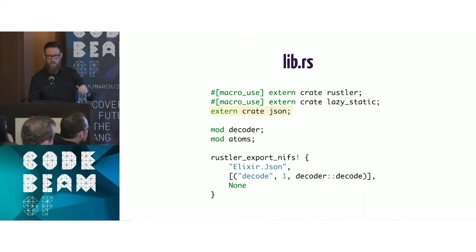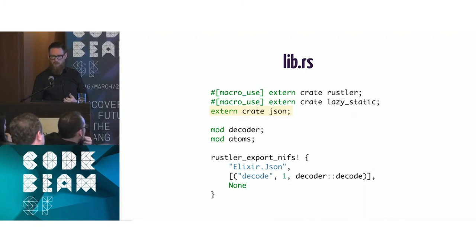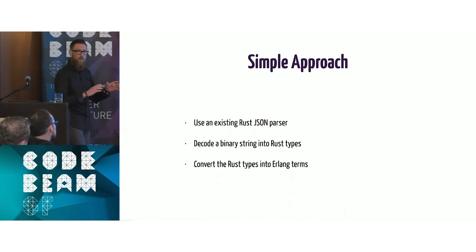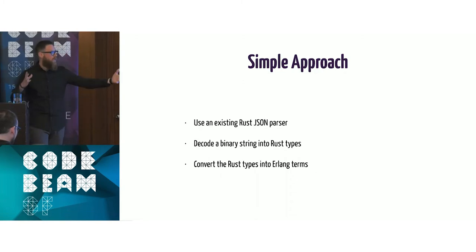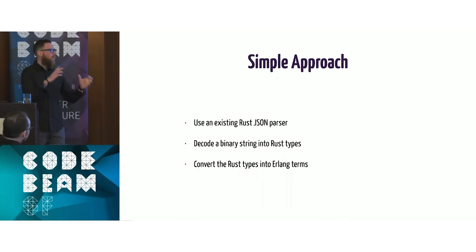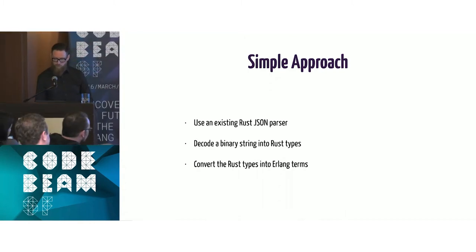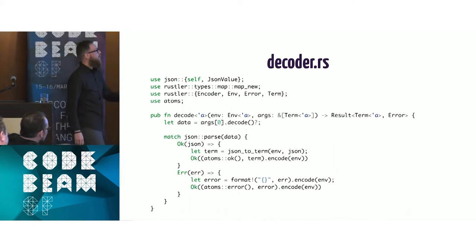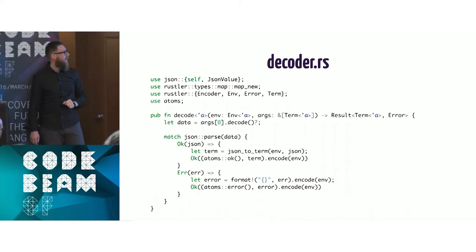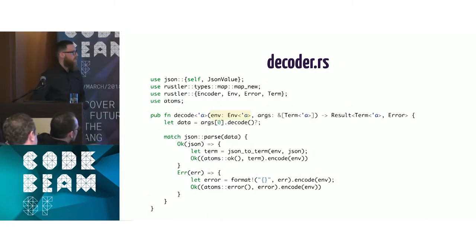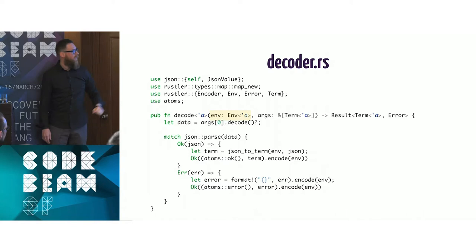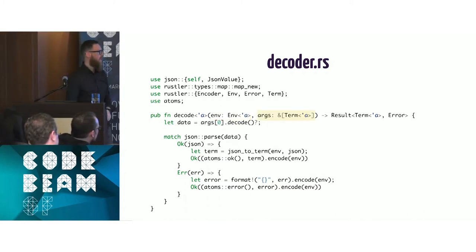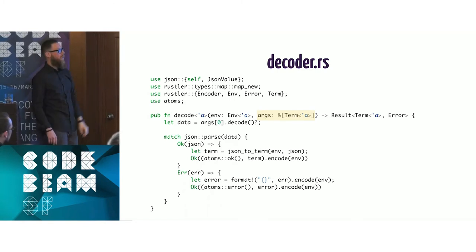We also pull in extern crate json — a Rust library for parsing JSON. The simple approach: use the Rust crate to parse JSON, decode a binary string into Rust types, convert those Rust types into Erlang terms, and return the result to the caller. The decode function — the actual NIF — takes env as the first argument, a slice of terms as args, and returns a Result of term or an error.